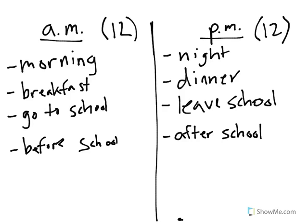This is a helpful way to remember that a.m. is things that happen in the morning, or any time between midnight and noon, and p.m. is anything that happens in the afternoon or evening.